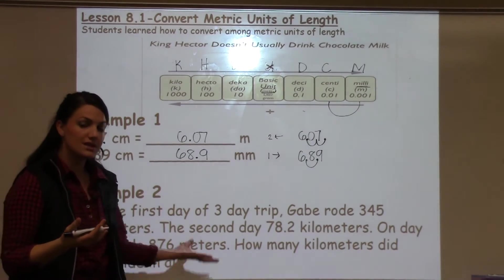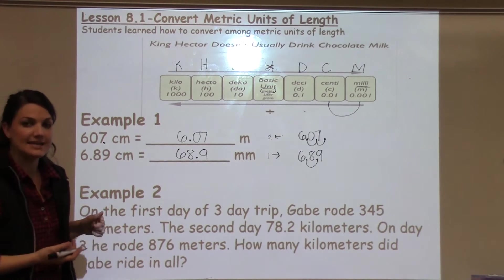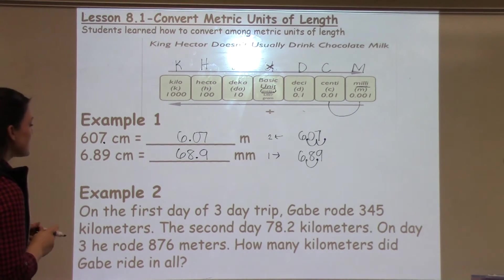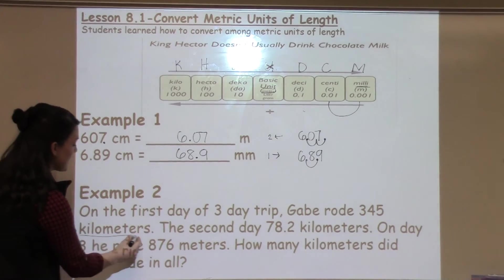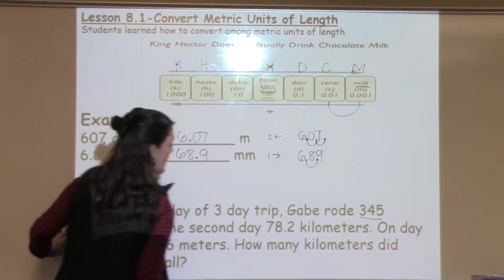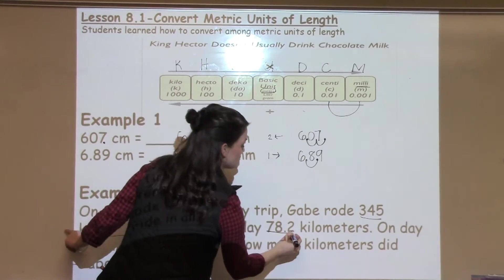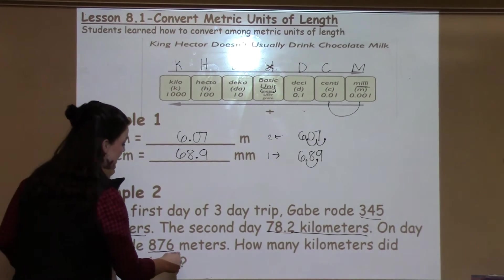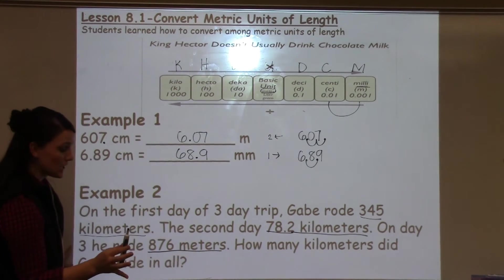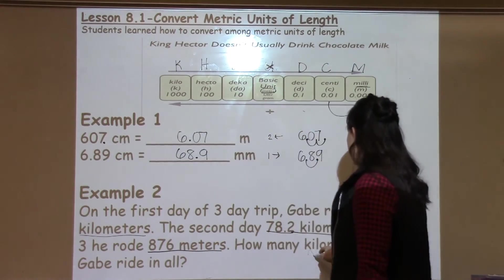Students also took the information that they learned with conversions today and applied it to word problems. So that's what we're going to look at in example two. It says on the first day of a three-day trip, Gabe rode 345 kilometers. The second day 78.2 kilometers, and on day three he rode 876 meters. How many kilometers did Gabe ride in all?